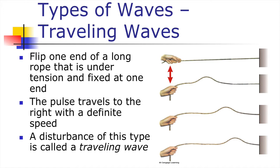Waves can be categorized into two types: transverse waves and longitudinal waves. You can see wave formation in a string — if you hold a string tied to a wall and flip it to one side, the vibration will travel along the string. Depending on the support, that disturbance can even come back to you.